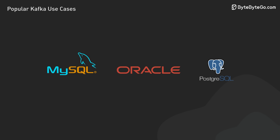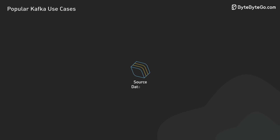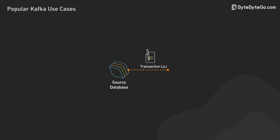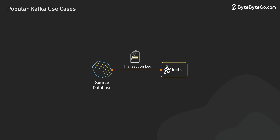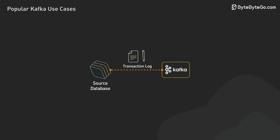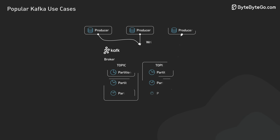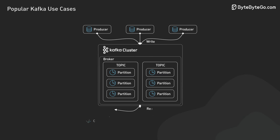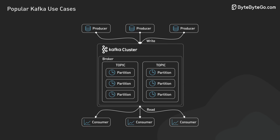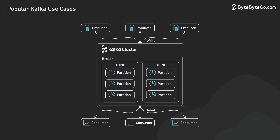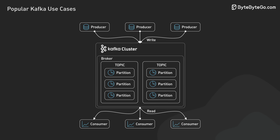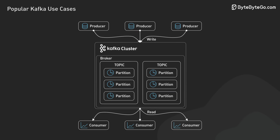This process begins with the source databases — the primary databases where data changes occur. These databases generate a transaction log that records all data modifications, such as inserts, updates, and deletes, in the order they occur. The transaction log feeds into Kafka, which stores these change events in topics. These allow multiple consumers to read from them independently, where Kafka's power as a scalable, durable message broker comes into play.